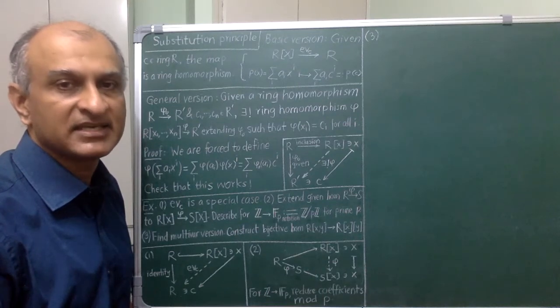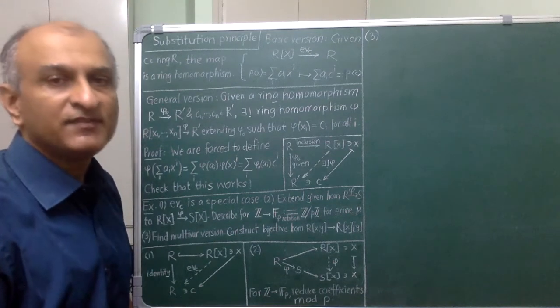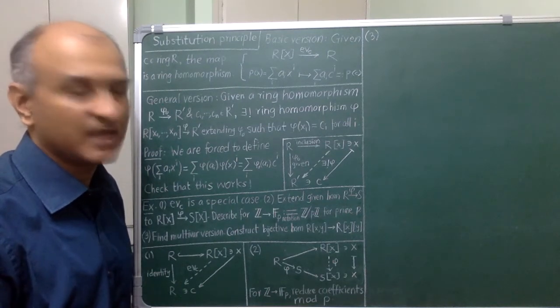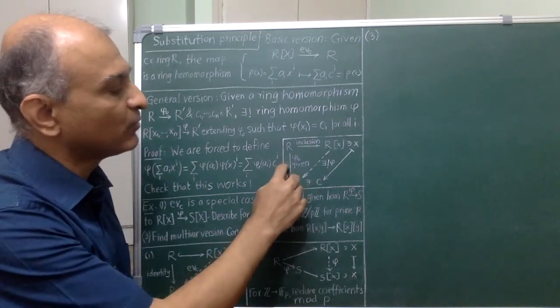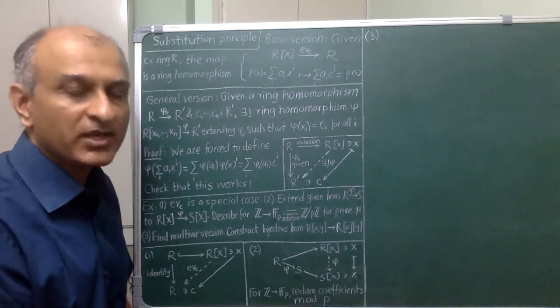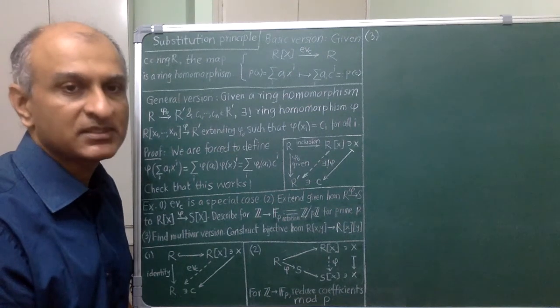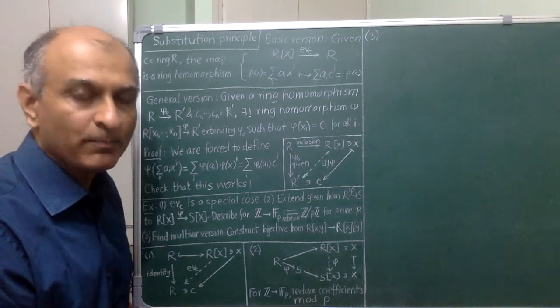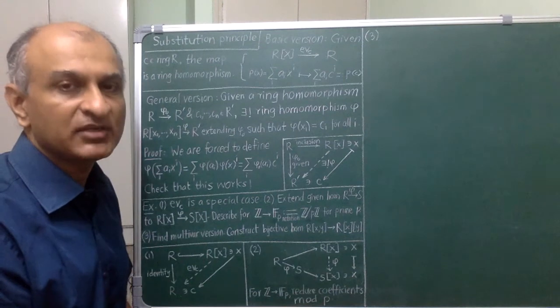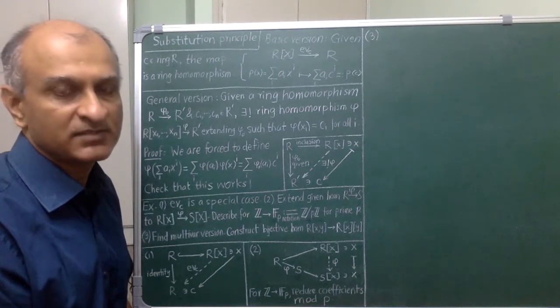Before we begin these exercises, a quick comment. We have started drawing various commutative diagrams where individual arrows are ring homomorphisms. To check commutativity of these diagrams, we have to compose these homomorphisms. So, a natural question is, if I compose two ring homomorphisms, is the result still a ring homomorphism?